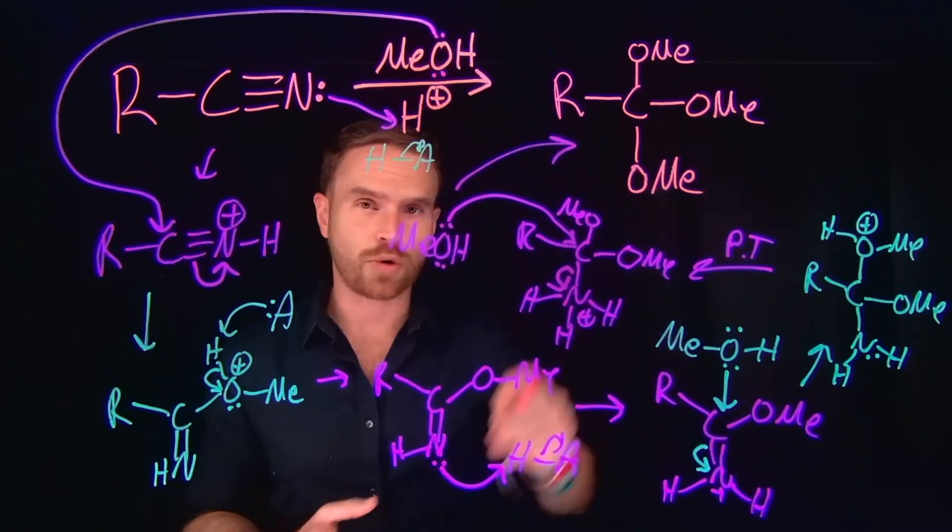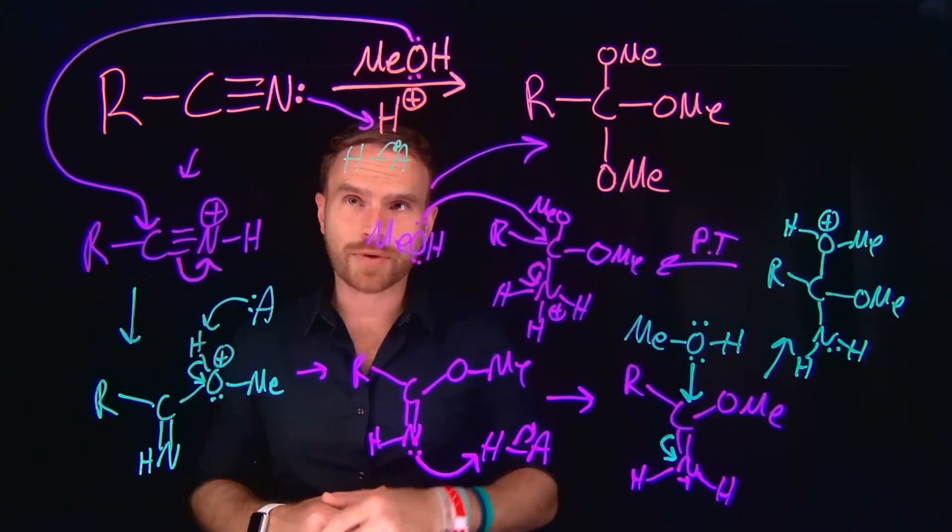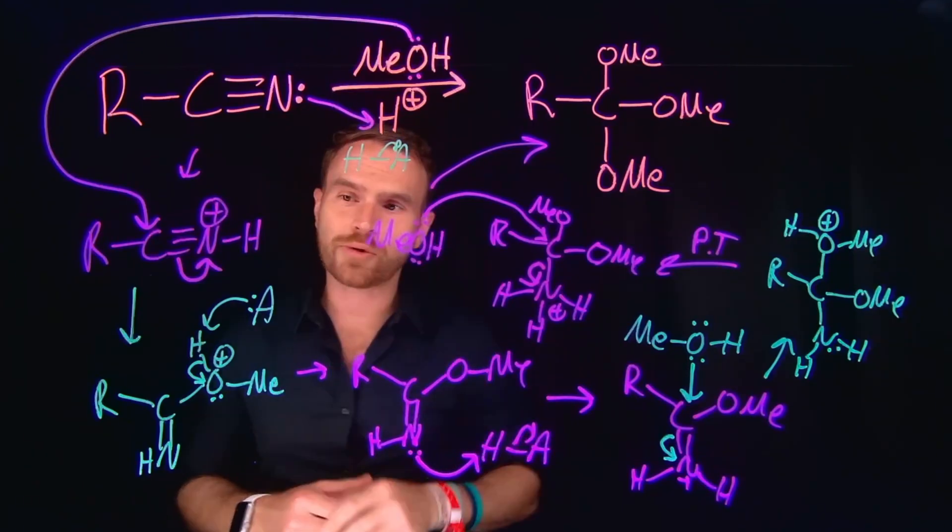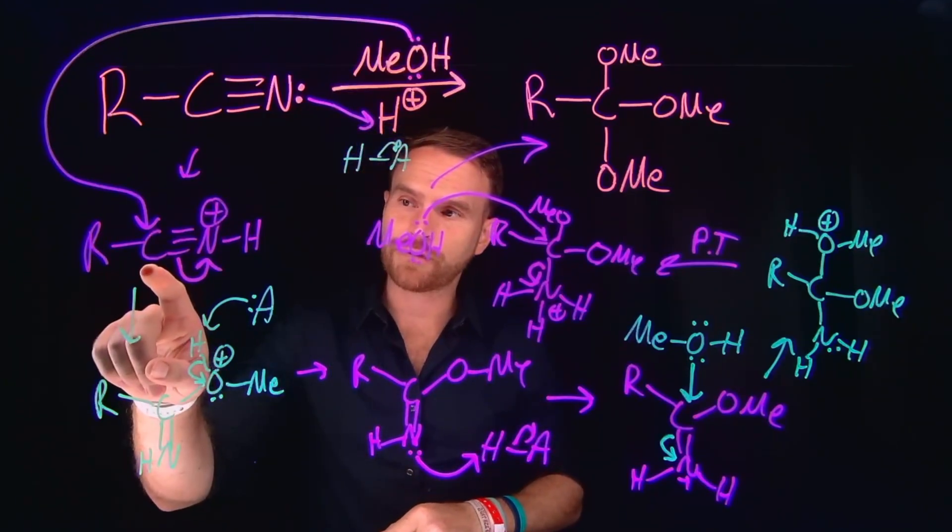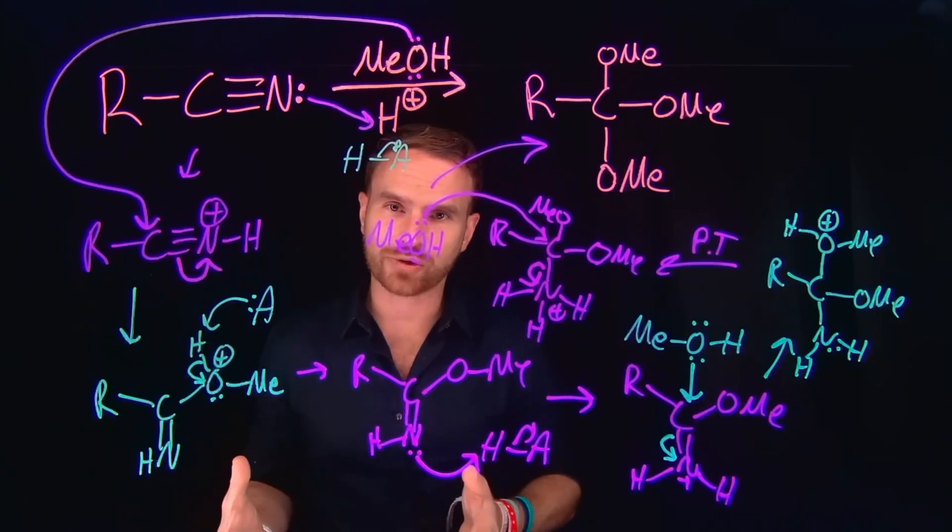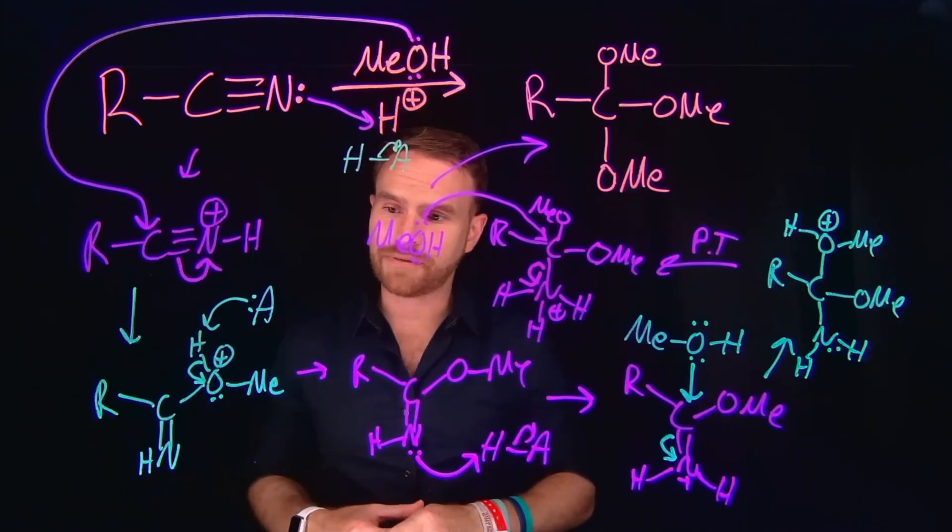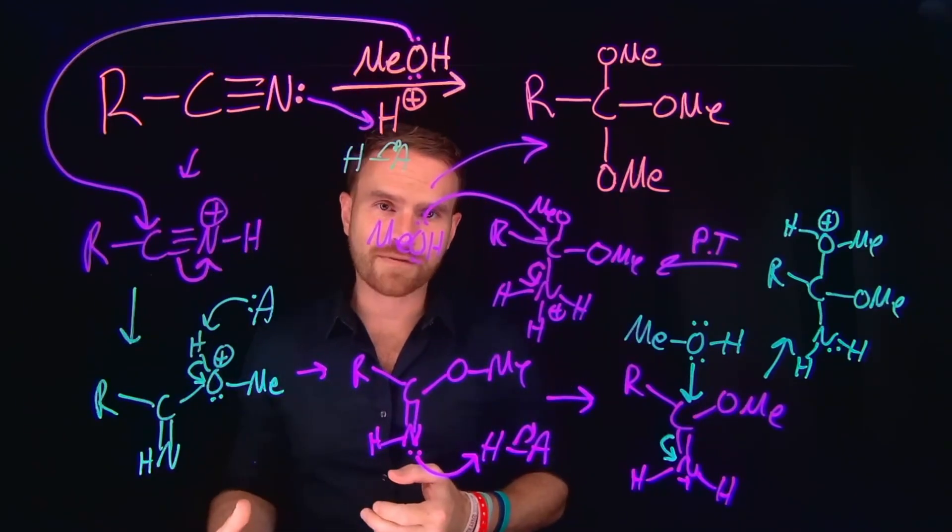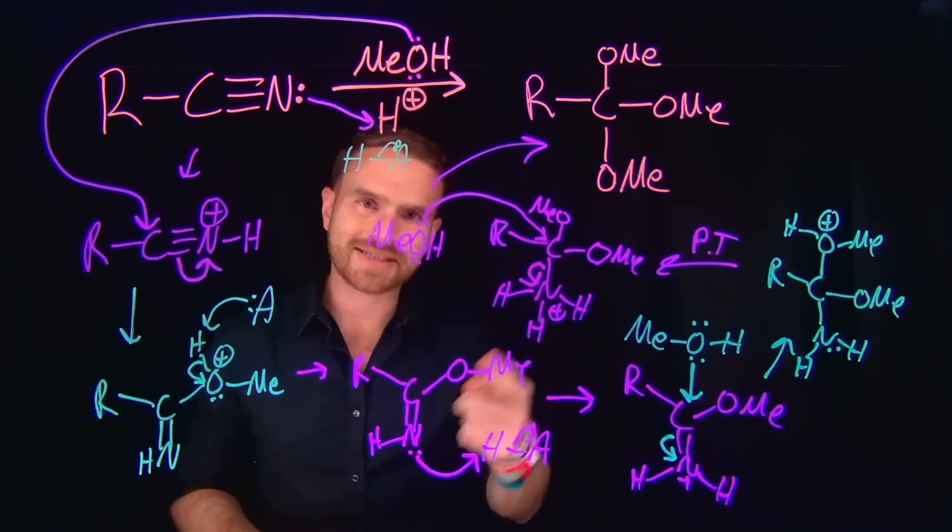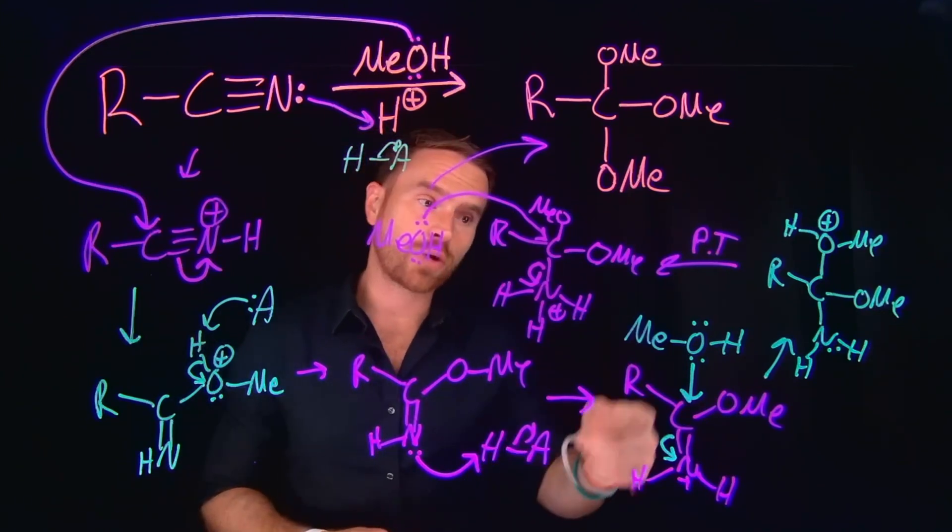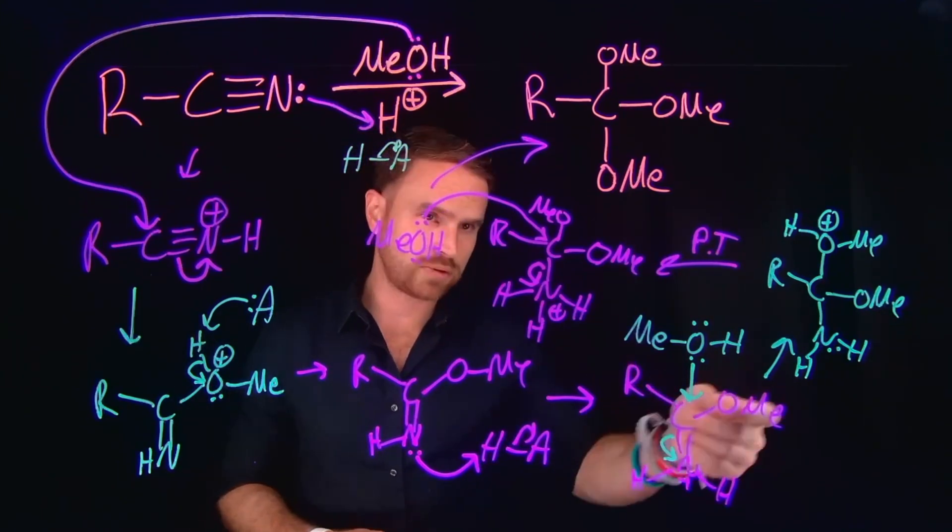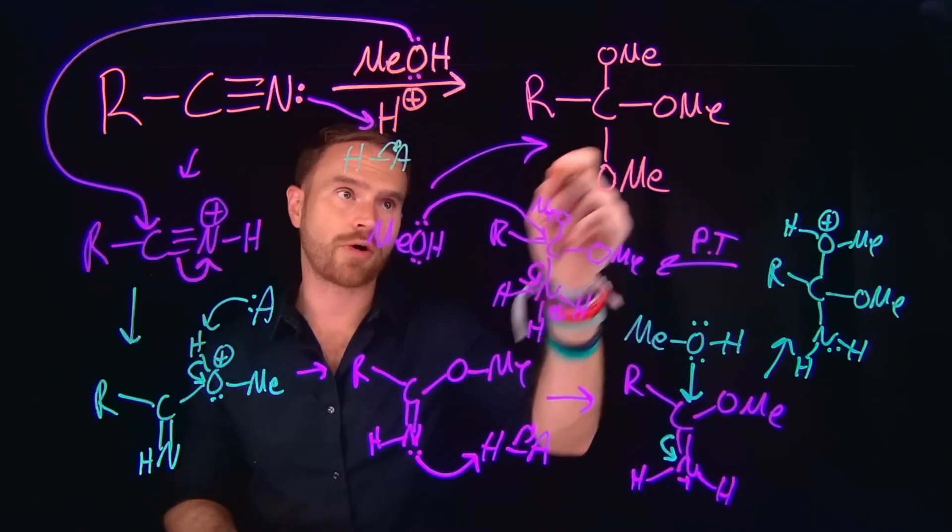So then the sequence of events in this reaction is going to be protonation of that terminal nitrogen to generate a very electrophilic carbon and a positively charged nitrogen. This will allow our methanol to come and attack as a nucleophile, eventually undergoing several different proton transfers to allow that sequence to happen again. And subsequent nucleophilic attack followed by proton transfers eventually gets us to our orthoester.